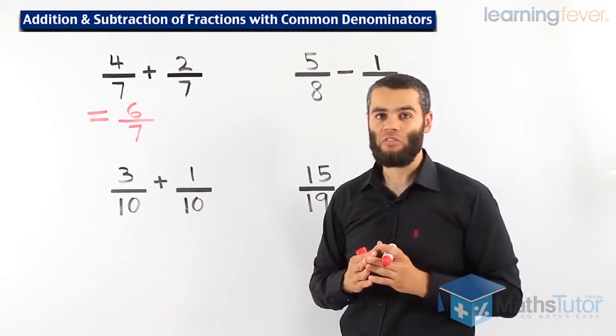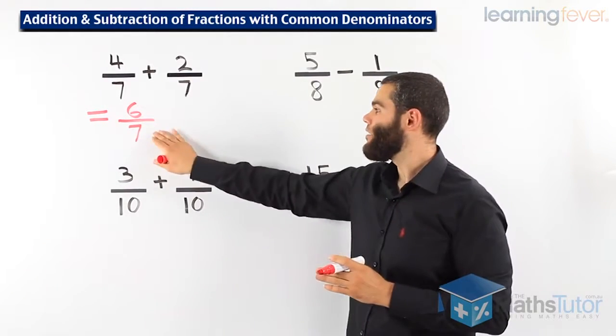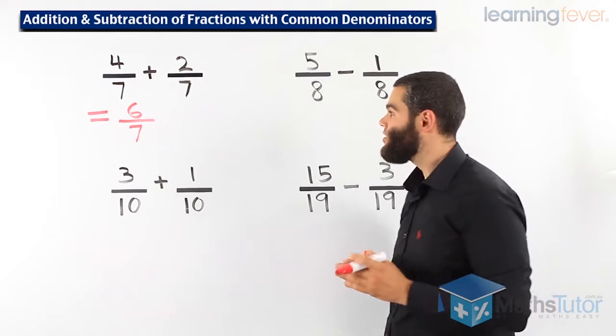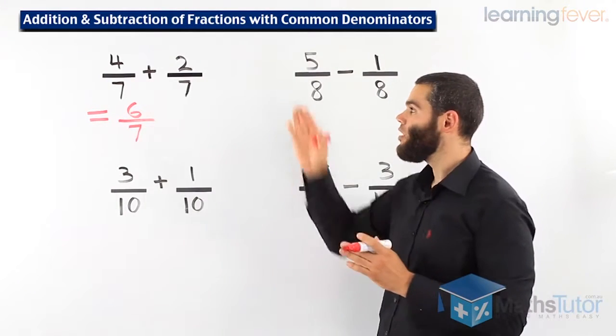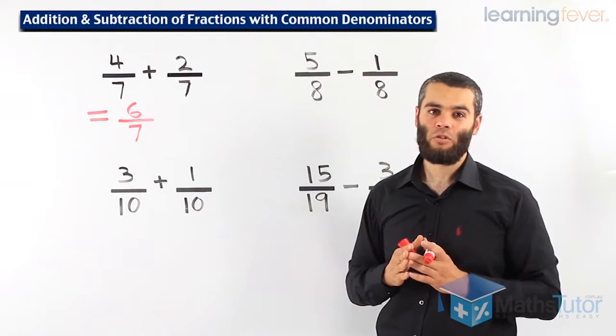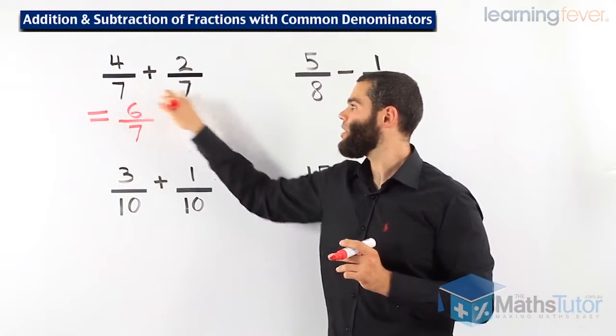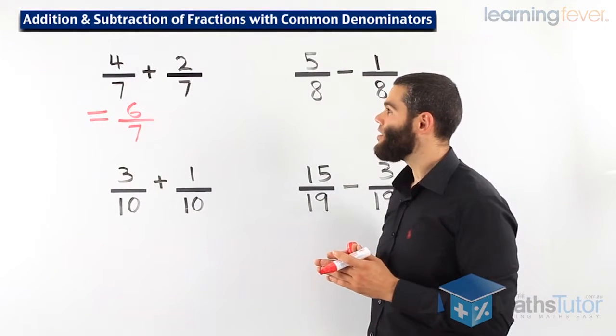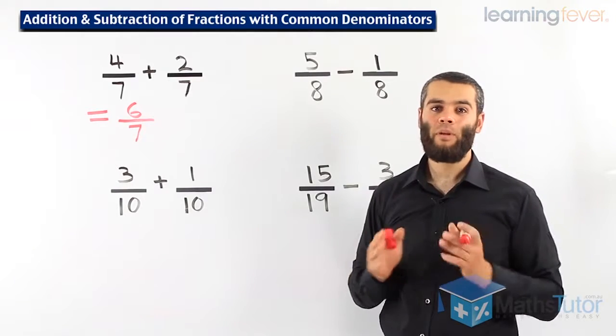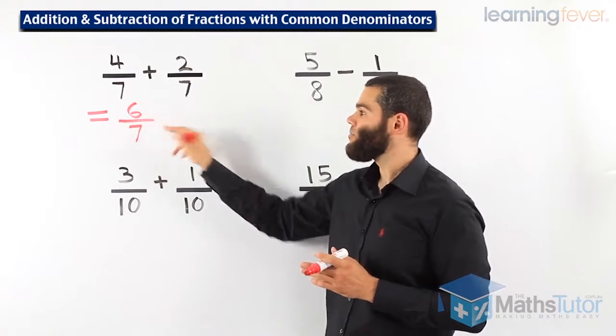We ask ourselves, can we simplify? If the answer in this case is no, then this is our answer in full. 6 over 7 is the full answer for 4 over 7 plus 2 over 7. So common denominators, meaning the denominators are the same. That means we can add or subtract the fractions. In this case, 4 over 7 plus 2 over 7, 4 plus 2, 6 over 7.